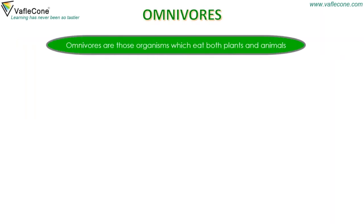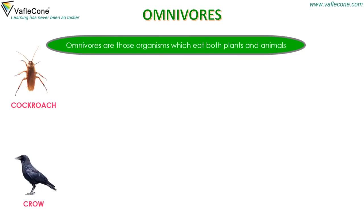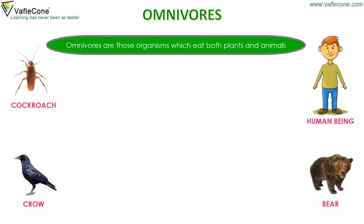Omnivorous are those organisms which eat both plants and animals. For example, cockroach, crow, human being, bear, etc.